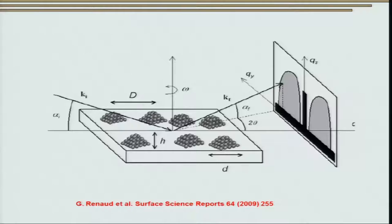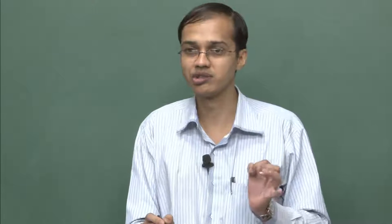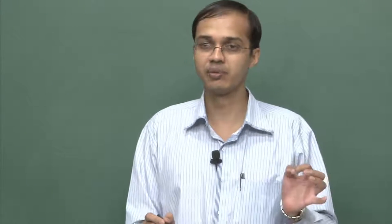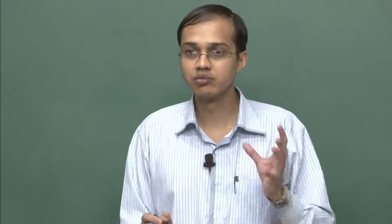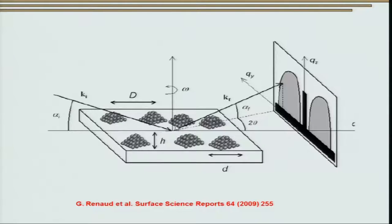Here is another schematic borrowed from a review paper by Renaud et al. showing the realistic picture of what exactly is happening during GISAXS. The incident beam probes very small dimensions of the order of a few nanometers. Sample rotation is provided about φ just to improve the statistics, and we can record the scattering pattern as a function of φ.